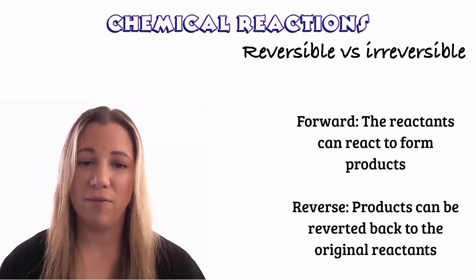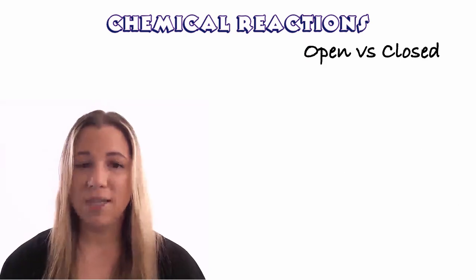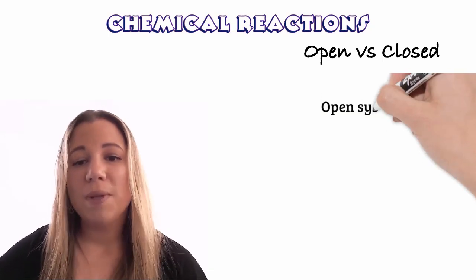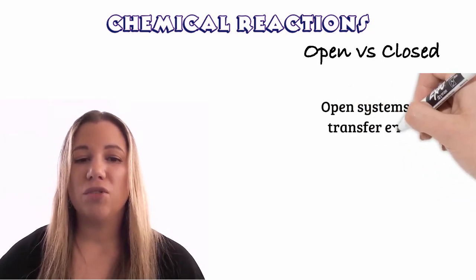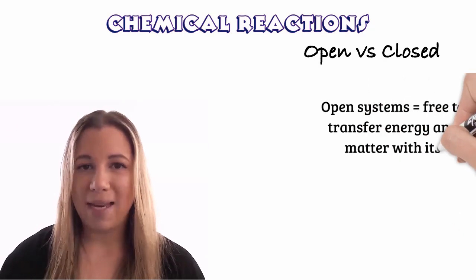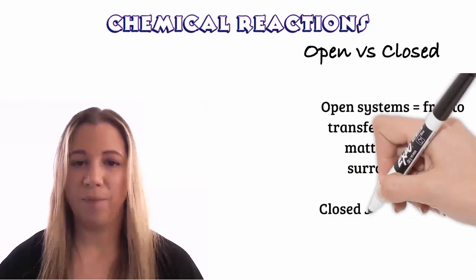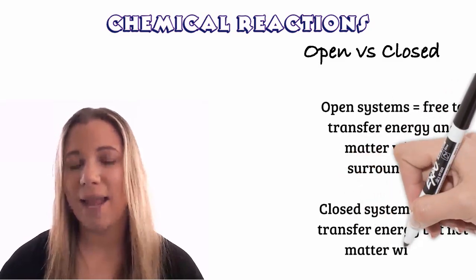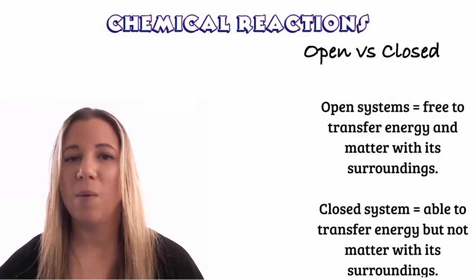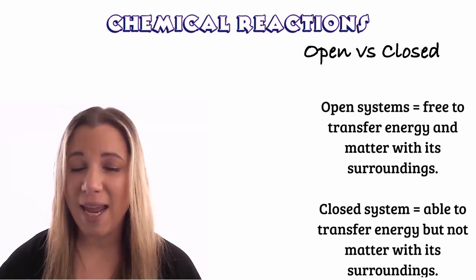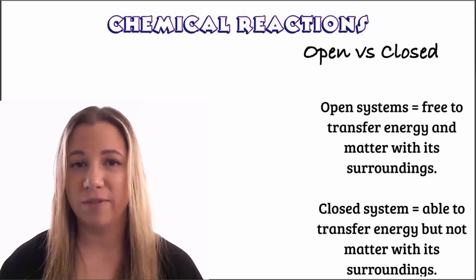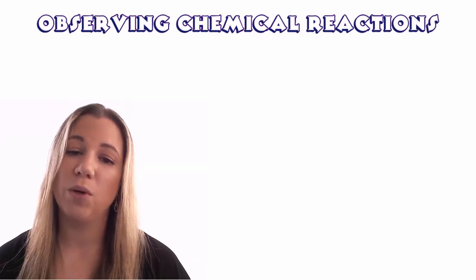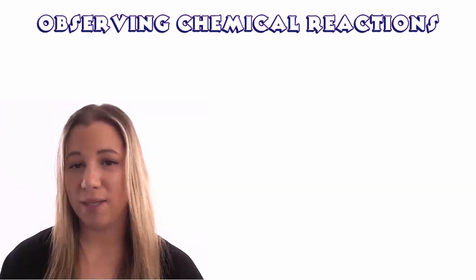Those products can be reverted back into the reactants — we call this the reverse reaction. Chemical reactions can occur in both open and closed systems. An open system is one that is free to transfer energy and matter with its surroundings, but a closed system is one in which no matter can enter or leave. However, energy, usually in the form of heat, is able to be transferred into and out of the system. In this video we're going to explore chemical reactions in both open and closed systems.